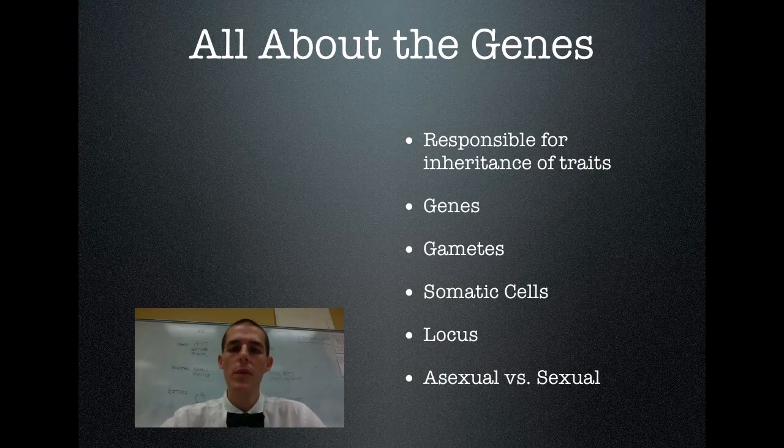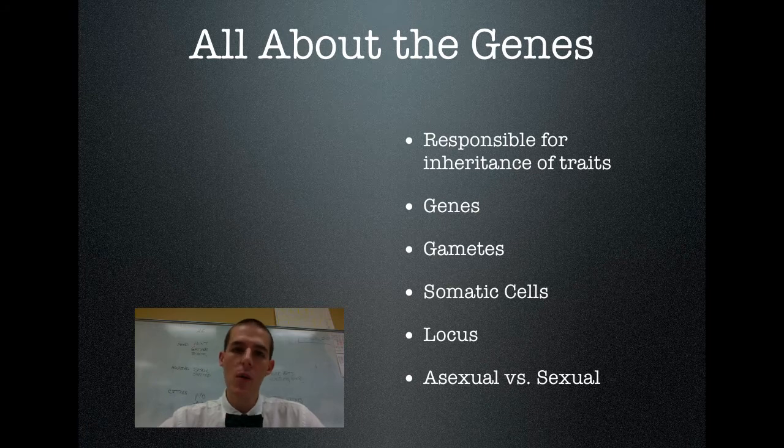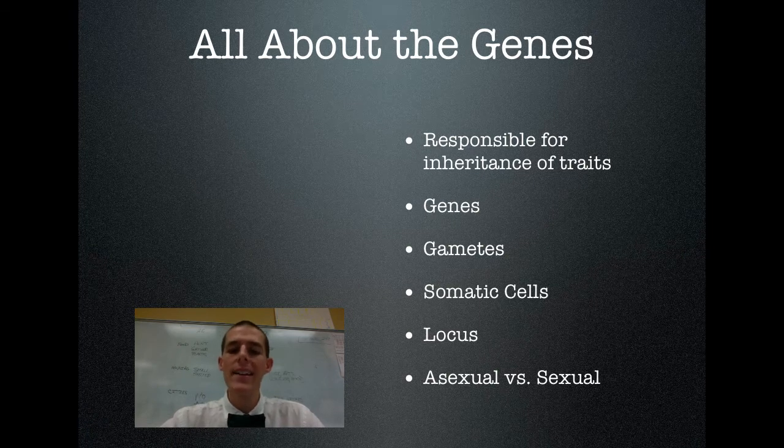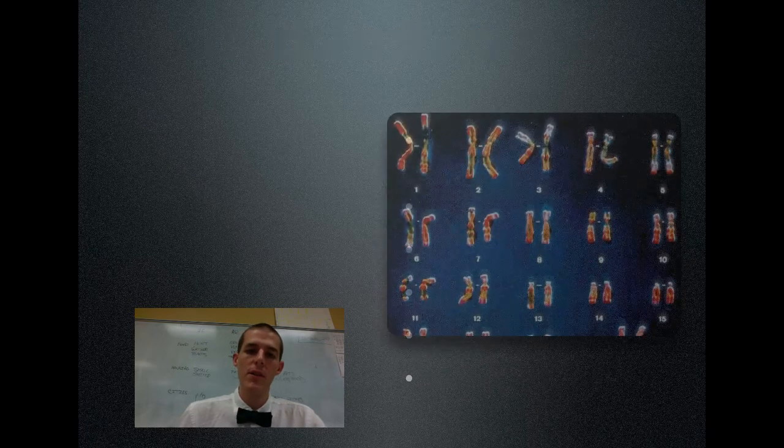And finally, asexual versus sexual reproduction. Asexual reproduction is a mode of reproduction that produces exact copies. They are genetically identical to each other. A lot of single-celled organisms go through this type of reproduction. There is no mixing of genes from outside participants or partners. You're just producing an exact clone of yourself. In sexual reproduction, there is the mixing together of genetic material from two different individuals. So no asexual, no mixing of genetic material. Sexual, you're bringing together two different sets of genetic material.